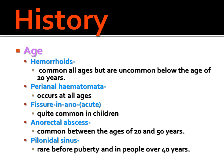Now coming to the history. How many patients are seen in which age group? Hemorrhoids are common in all ages but are not common below the age of 20 years. Perianal hematoma is the most common in all ages. Fissure in ano is an acute condition and is very common in children. Anorectal fistula is common between the ages of 20 to 50 years. Pilonidal sinus is rare before puberty, and anorectal carcinoma is more common in patients over 40 years of age.